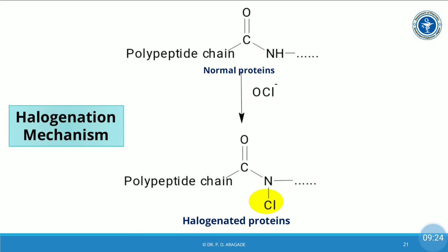Looking at the diagram, the normal protein has amide functional groups. When halogens are added, they attach at the amide functional groups, changing the shape of the protein and causing its destruction. By this mechanism, chemical agents with the ability to kill microorganisms — a very good example being iodine — exert their antimicrobial effect.